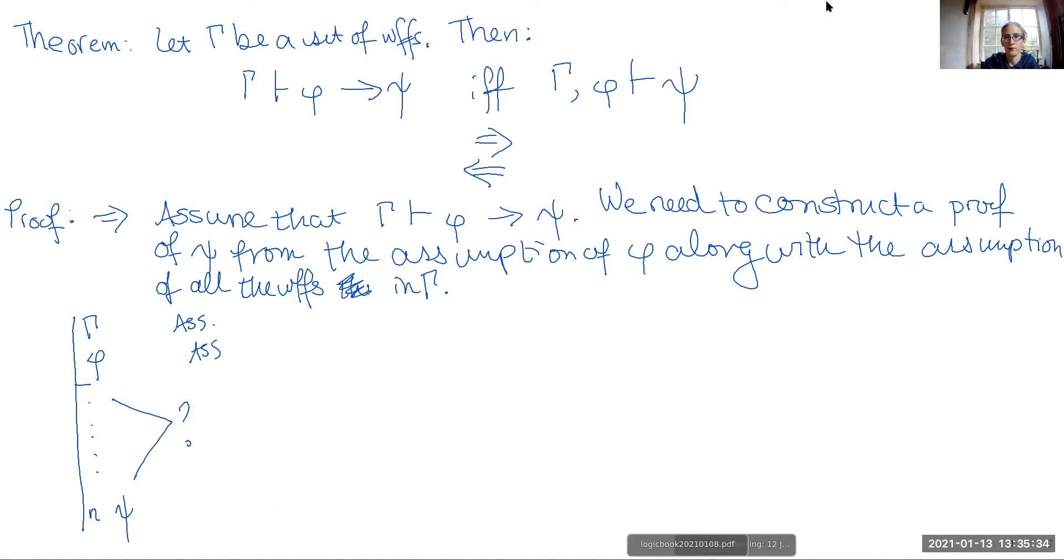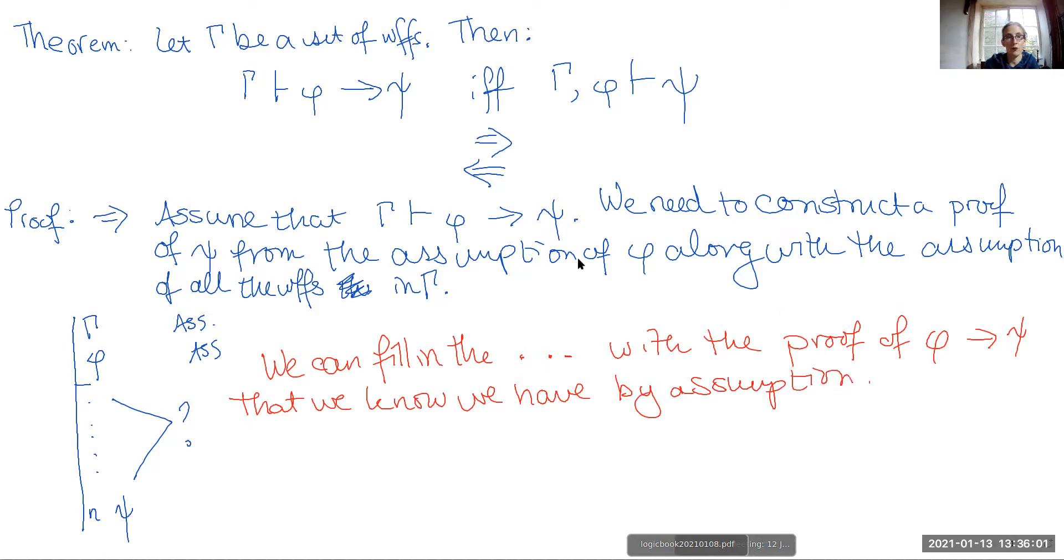We can fill in the dot dot dot with the proof of phi implies psi that we know we have by our assumption. The assumption that we made that from gamma alone we can prove that phi implies psi. So we have gamma here, so anything that we can prove from that, we can just write down that proof.